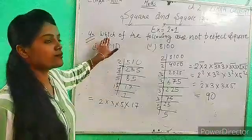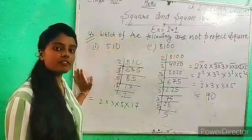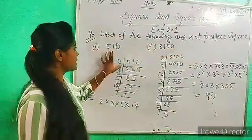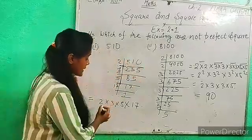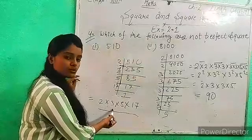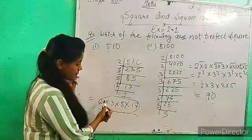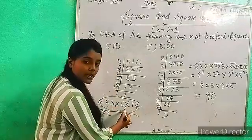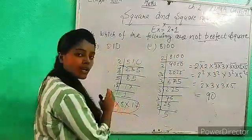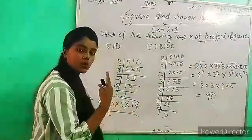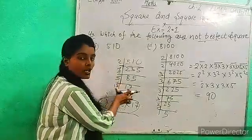Question number 4: each of the following numbers, find which are not perfect squares. First question: 510. Here we can see that 510 = 2 into 3 into 5. What is power 2? There is no power 2 pairing, which means it is not a perfect square.